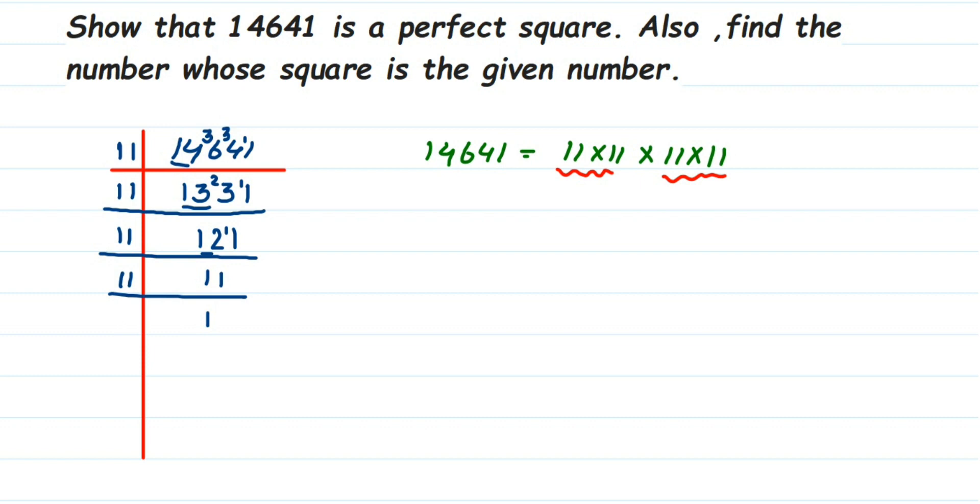Now, how to find out whose square it is? For that, you will find out the square root. 14,641 is equal to—from the factors we got, from each pair you take one factor. So from the first pair we're going to take 11, and from this we're going to take 11, and multiply them. So 11 × 11 is 121. So 121 squared is 14,641, or the square root of 14,641 is 121.